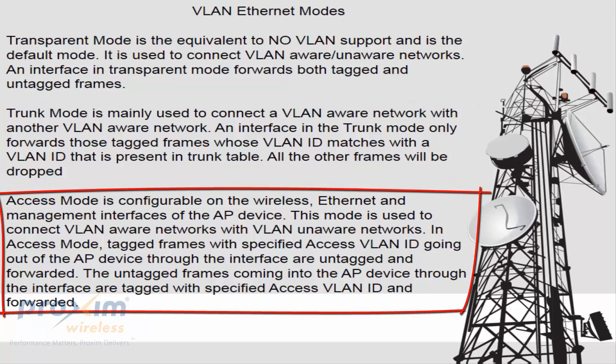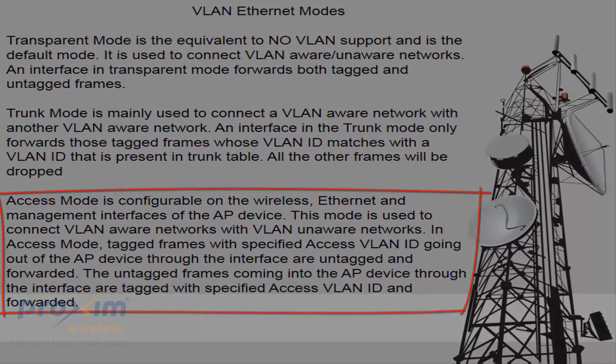Access mode is configurable under the wireless Ethernet and management interfaces of the AP device. This mode is used to connect VLAN-aware networks with VLAN-unaware networks. Tagged frames with a specified VLAN ID going out of the AP through the interface are tagged and forwarded. Untagged frames coming into the AP device through the interface are tagged with the specified access VLAN ID and forwarded.